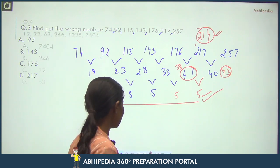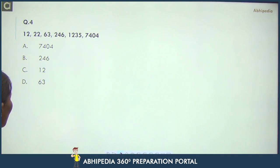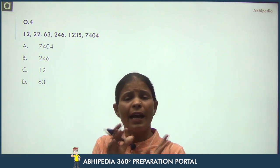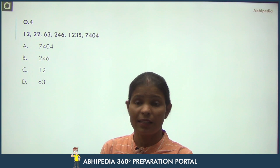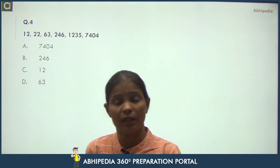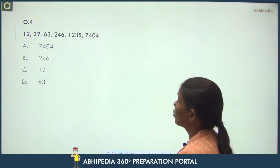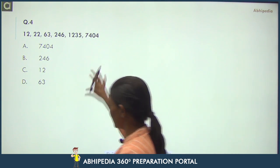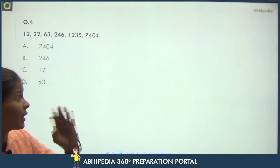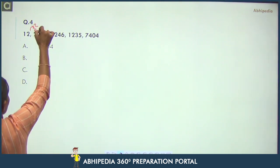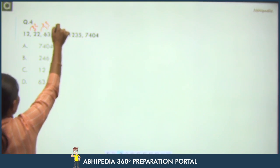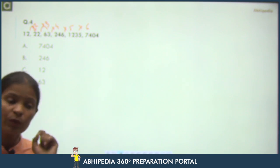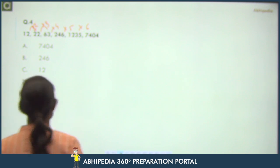Next series: 12, 22, 63, 1235, 7404. The series goes from smaller to bigger numbers — multiplication logic may apply. Check which multiples these look like: nearby 2×, 3×, 4×, 5×, 6× respectively. There is also some plus/minus happening alongside multiplication.